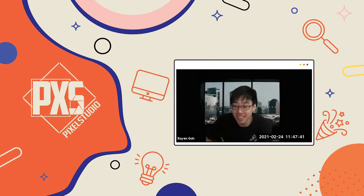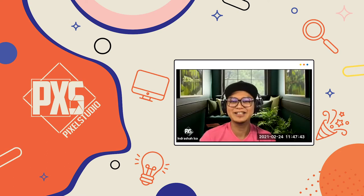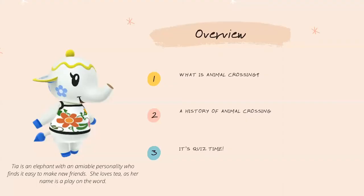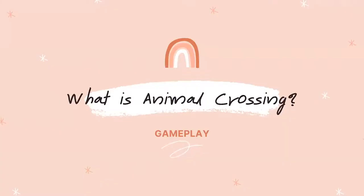Animal Crossing - okay, take it away Claudia. So this is the overview - basically it's a very general presentation about Animal Crossing, and we will be covering what is Animal Crossing and the history of Animal Crossing. This is Tia, one of the characters that might show up in your game. She's an elephant with an amiable personality who finds it easy to make friends, and she loves tea - her name is a play on the word.